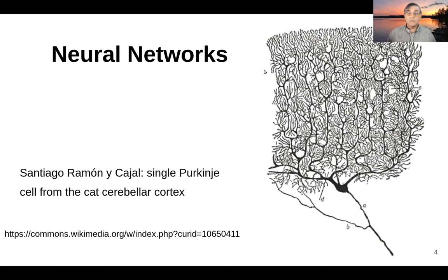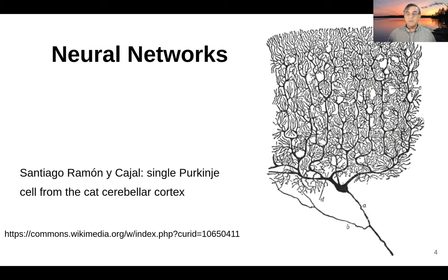This whole area here is the input side of the neuron. We refer to that as the dendritic tree. Signals that come into any point within this tree flow down the tree and ultimately to the cell body, which is right here.